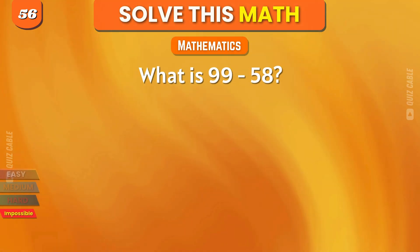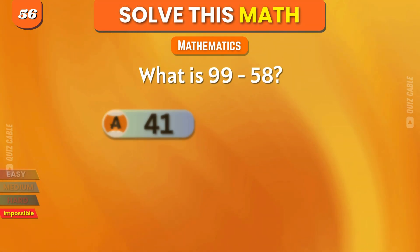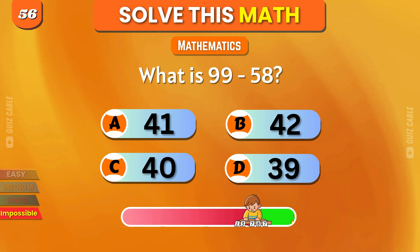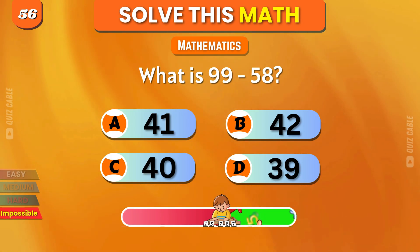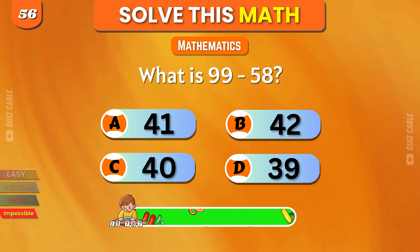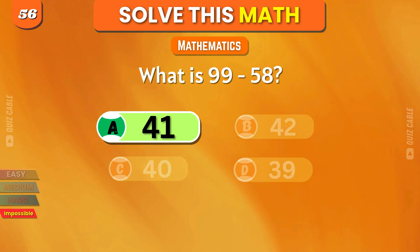What is 99 minus 58? 41, 42, 40, 39. Correct, 41.